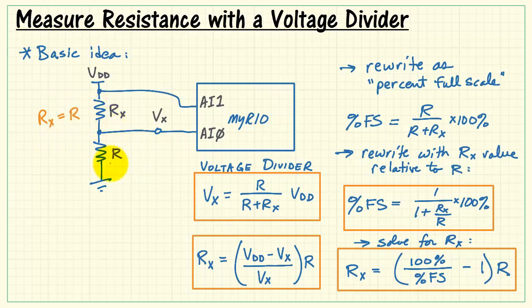Here's another case. Supposing Rx happens to be exactly equal to the fixed-valued resistor R. In this case, Rx over R is 1. We're left with 1 divided by 2 times 100%, that would be 50%, half full-scale, or Vx would be VDD over 2.